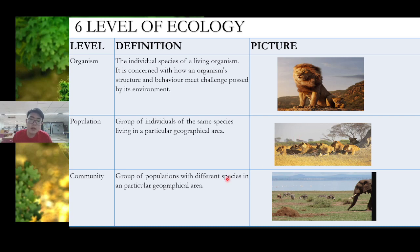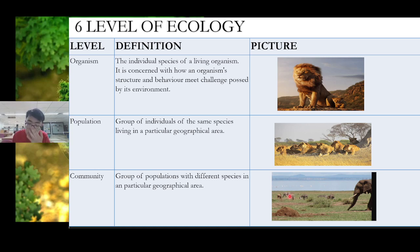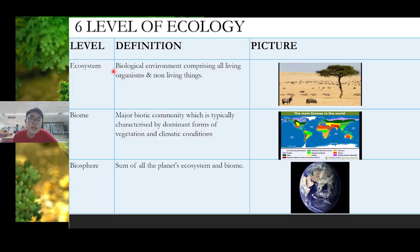Another higher level is community. Community is a group of populations with different species in a particular geographical area. Populations combine together to form a community — many different species together. If you see this picture, there are elephants, zebras, and horses — many species combined together with different populations.